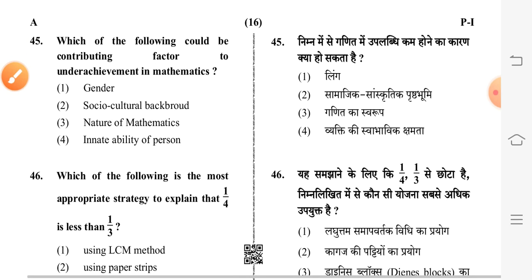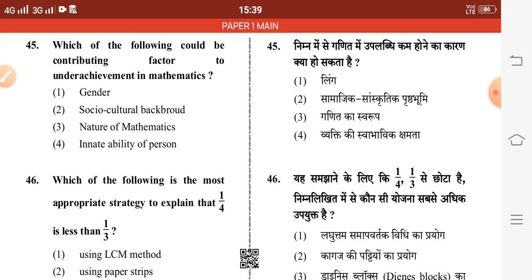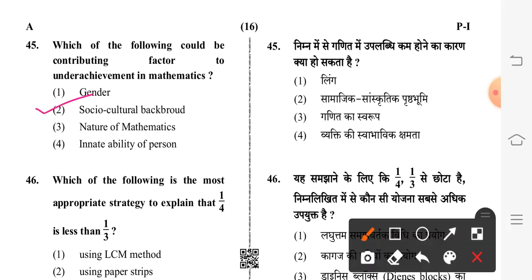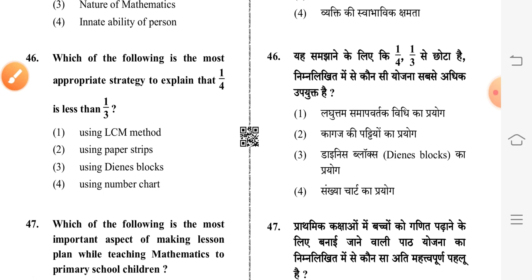Question 45: which of the following could be a contributing factor to under-achievement in mathematics? Second option is correct: social and cultural background. Question 46: which of the following is the most appropriate strategy to explain that one-fourth is less than one-third? Second option is correct: using paper strips.